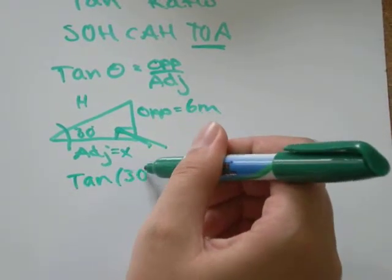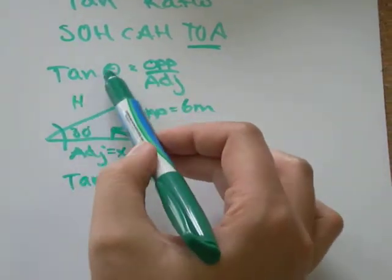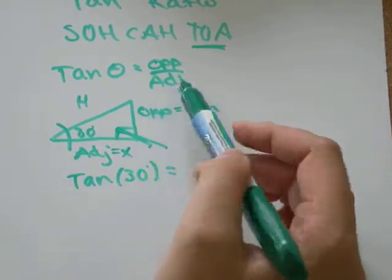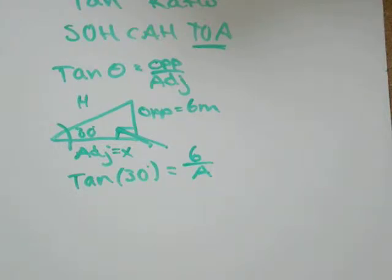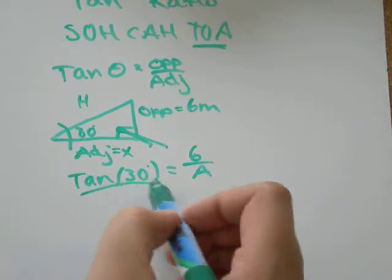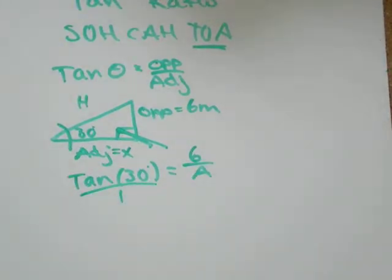We know that theta equals 30 degrees. We know that tan of any theta equals opposite divided by adjacent. Opposite is 6. Adjacent, we don't know.